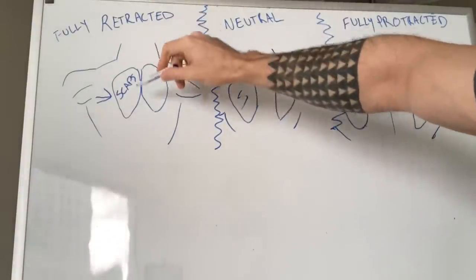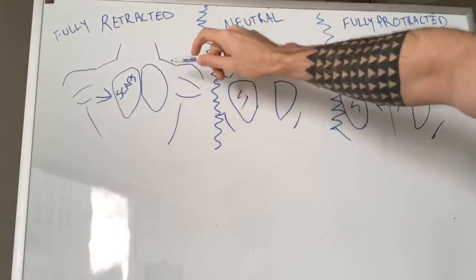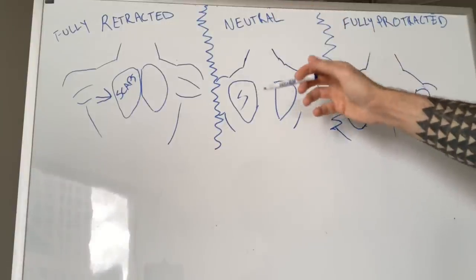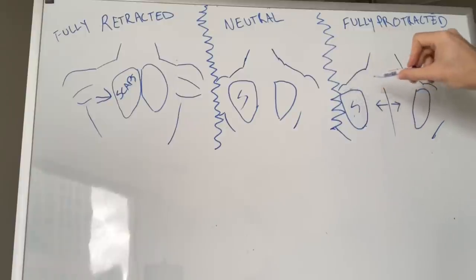Putting them back is retracting. When they're fully retracted, your scapulas are most close together. When they're neutral, they're neutral. They're just where they're supposed to be at. And when they're fully protracted, that's when they're farthest apart.